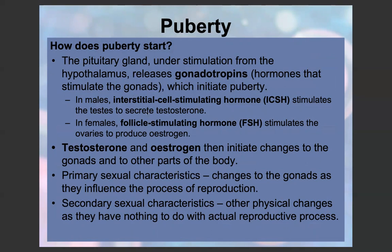In males, the interstitial cell-stimulating hormone, ICSH, stimulates the testes to secrete testosterone. In females, FSH, the follicle-stimulating hormone, stimulates the ovaries to produce estrogen. Testosterone and estrogen then initiate the changes to the gonads and to the other parts of the body.